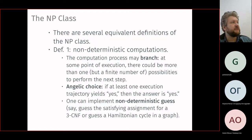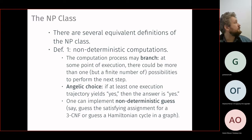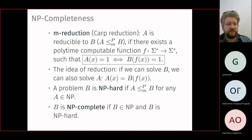The second definition of NP uses hints: someone gives you a hint, and given the hint you can verify it is correct in polynomial time. The existence of such a hint guarantees the answer is yes. For boolean satisfiability, the hint is the satisfying assignment. This leads to the notion of reduction.